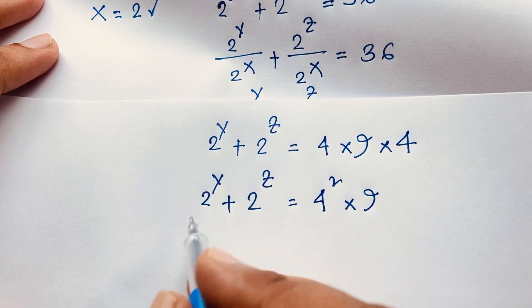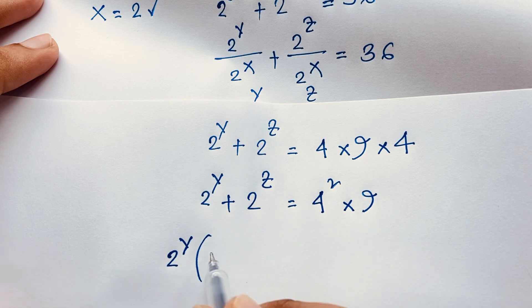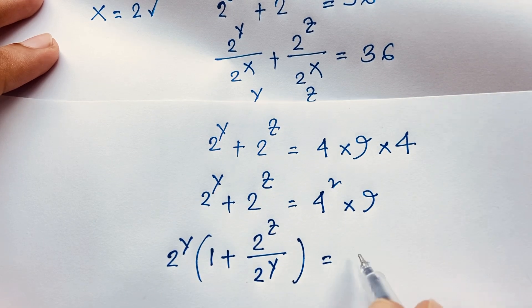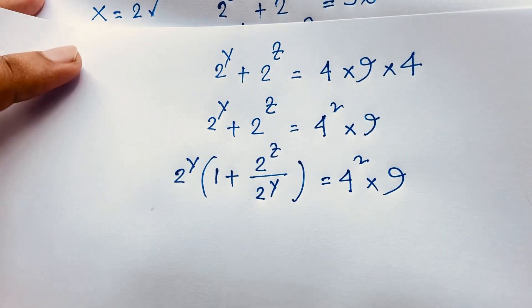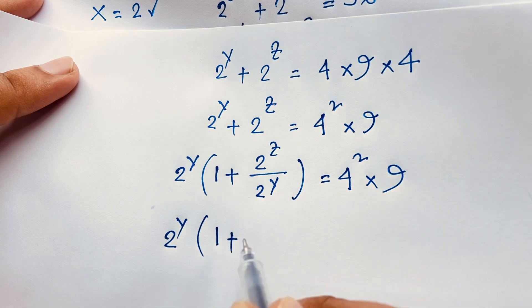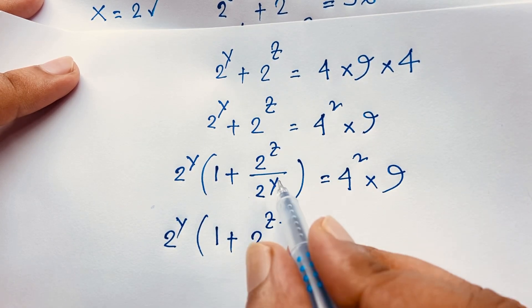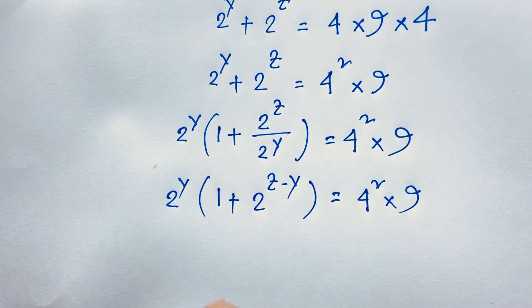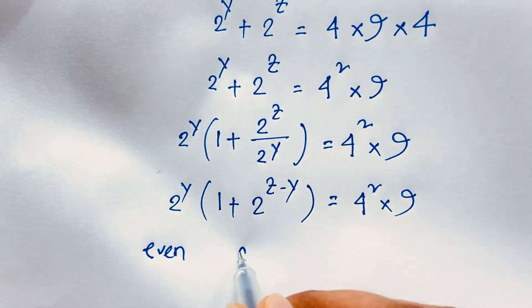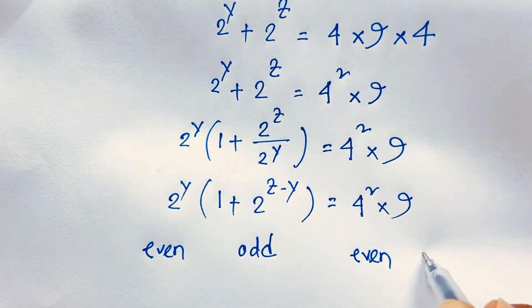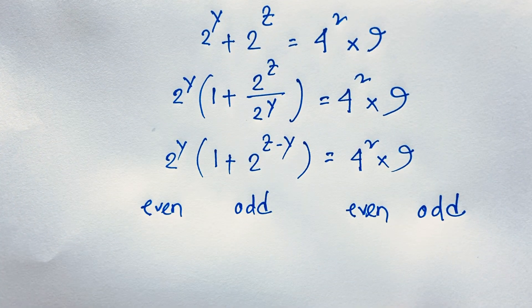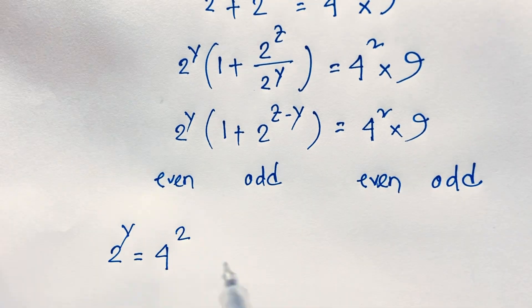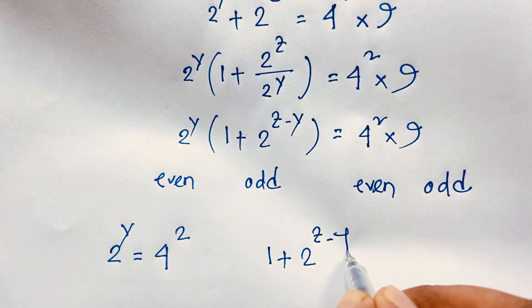Taking 2 to the power y as a common factor, we get 2 to the power y times the quantity 1 plus 2 to the power z minus y equals 4 squared times 9. Comparing the even and odd parts: 2 to the power y equals 4 squared, and 1 plus 2 to the power z minus y equals 9. Since 4 squared equals 2 to the power 4, and the bases are equal, y equals 4.